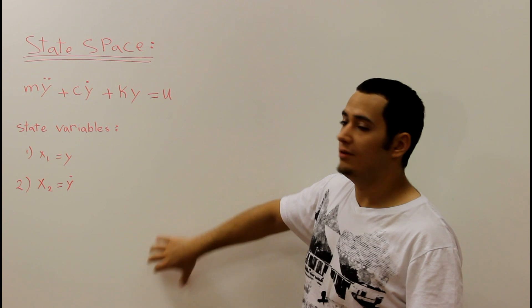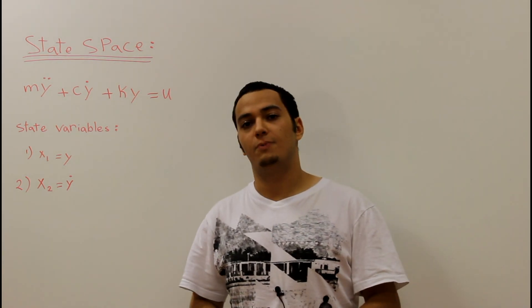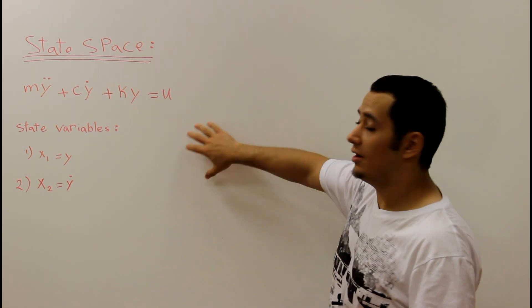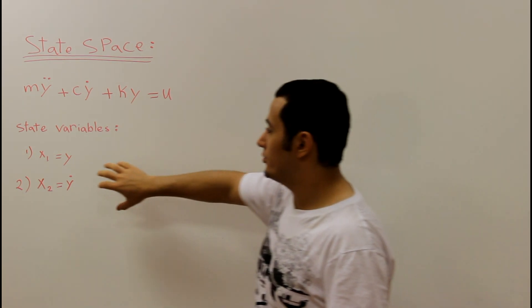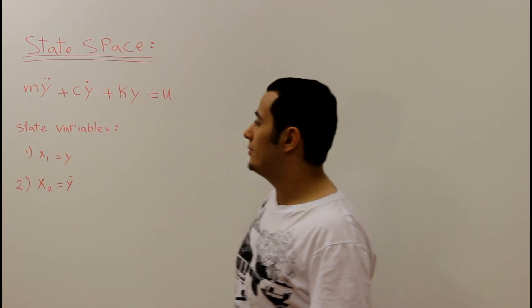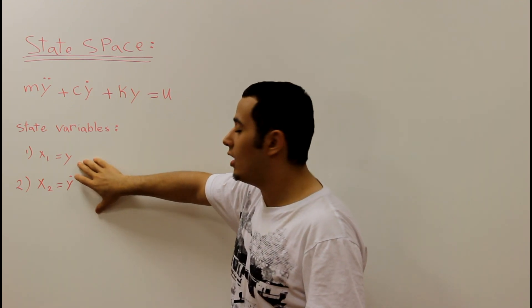it asks us to find the state space representation. So we have a differential equation and we have two conditions, two state variables. The first one says x1 equal y,